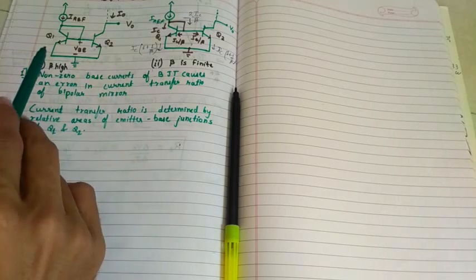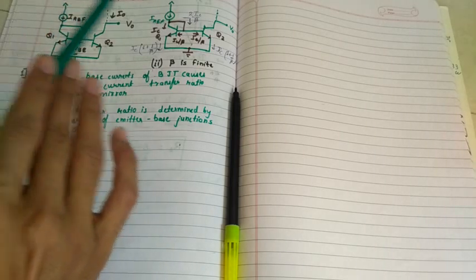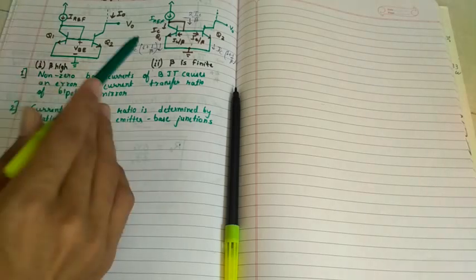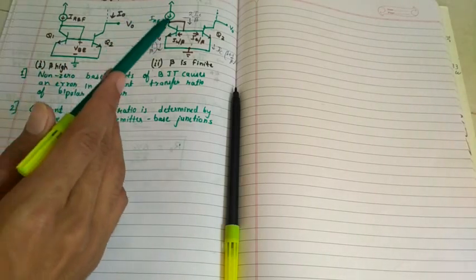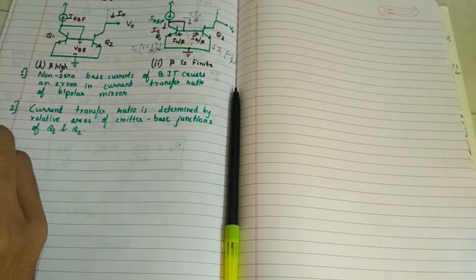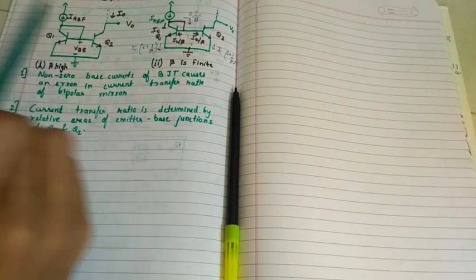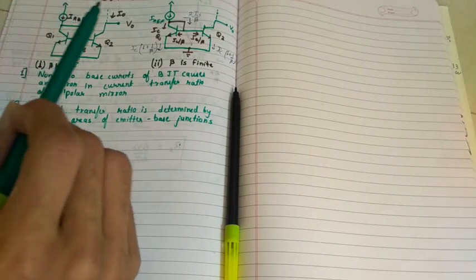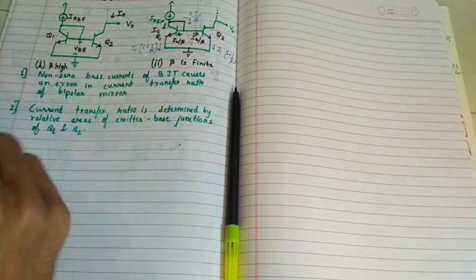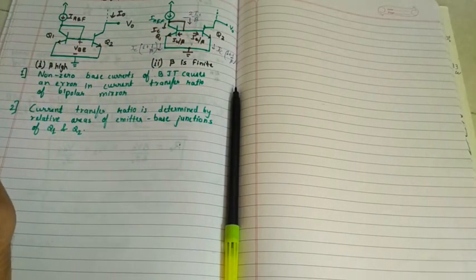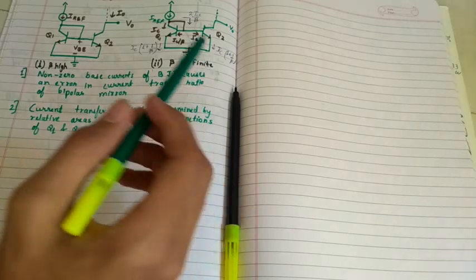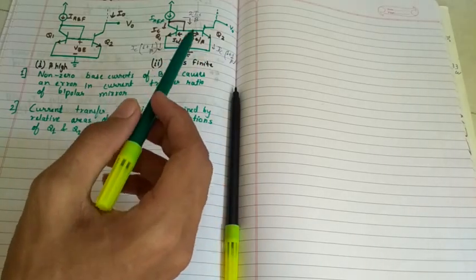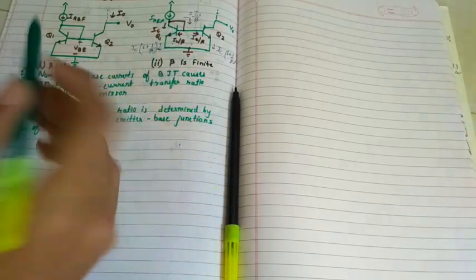First point is that obviously the analysis with BJT will be complicated. Why? Because here we have non-zero base current. In MOS case, the gate current is zero, so directly whatever is drain current is equivalent to source current. But here non-zero base current will add some extra complexity.